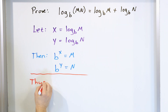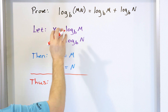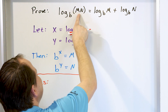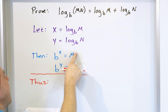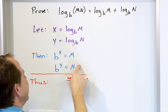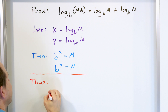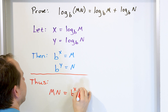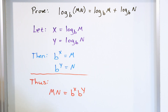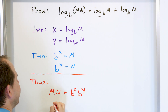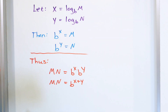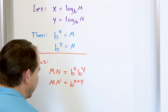Then — or I should say 'thus,' use words like that in a proof — I know I want to multiply m times n. But now I know what m and n are from these definitions. So m times n is b to the x times b to the y. Because these have the same base and different exponents, I can say this is b to the power of x plus y, because I can add the exponents whenever I have the same base.